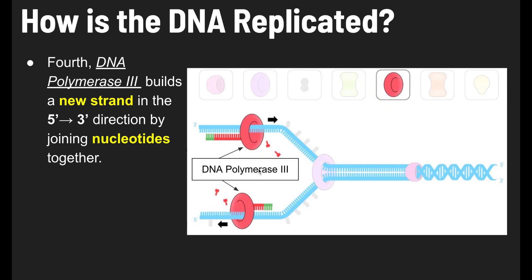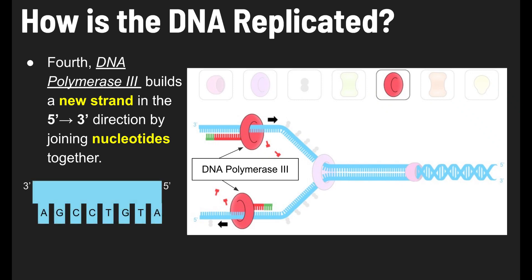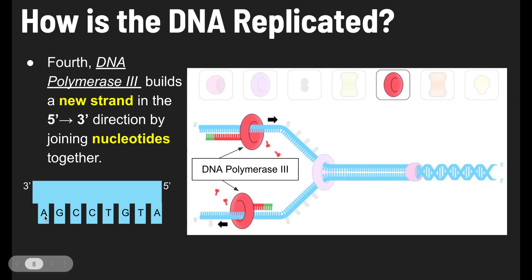One thing to know is how to determine the complementary strand that DNA polymerase III builds when given a sequence of bases. For example, given a piece of DNA — A, G, C, C, T, G, T, A — you need to make a complementary strand. DNA polymerase III builds it by adding nucleotides that complement those bases using base pairing rules: A always pairs with T, and G pairs with C.